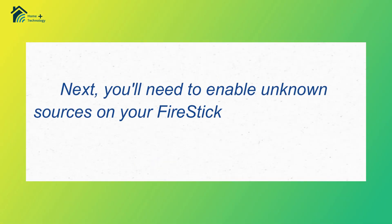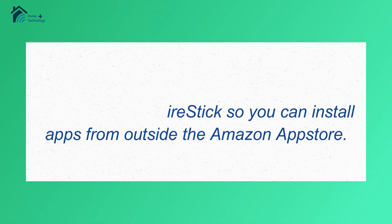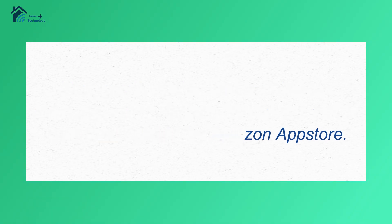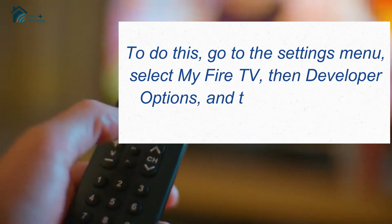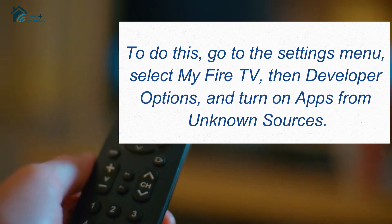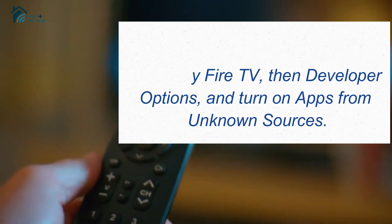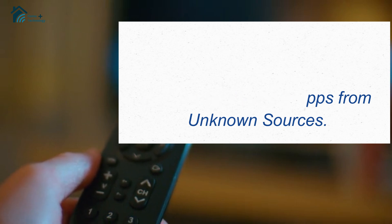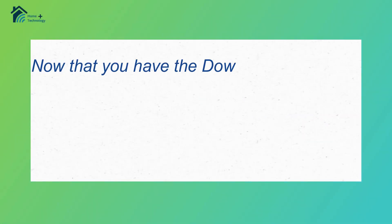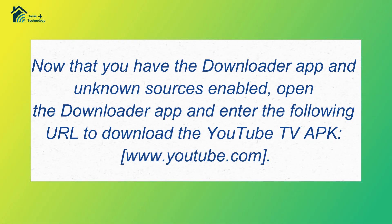Next, you'll need to enable unknown sources on your Fire Stick so you can install apps from outside the Amazon App Store. To do this, go to the Settings menu, select My Fire TV, then Developer Options, and turn on apps from unknown sources.